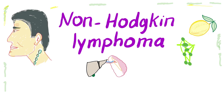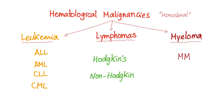It's Medicosis Perfectionalis once again, and today let's talk about non-Hodgkin's lymphoma, the most common type of lymphoma. As you know, hematological malignancies are leukemias, lymphomas, and myeloma.